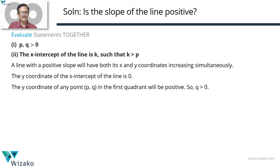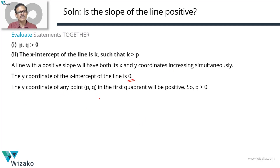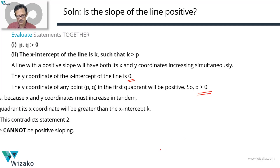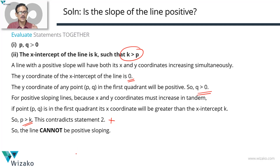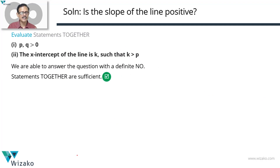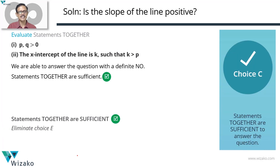To summarize: a positive sloping line has both X and Y coordinates increasing simultaneously. The Y coordinate of the X-intercept is 0, and the Y coordinate of any first quadrant point is greater than 0, so Q is greater than 0. Because it's a positive sloping line, P must be greater than K — but this contradicts statement two, which requires K greater than P. Therefore, if statement two holds, the line cannot be a positive sloping line. Combining both statements, we conclude the line is not positive sloping — a definite no. Choice C is the correct answer.